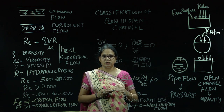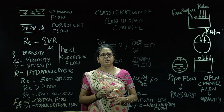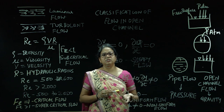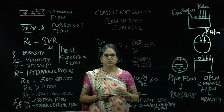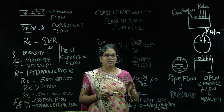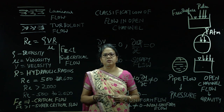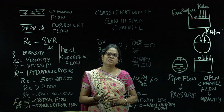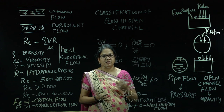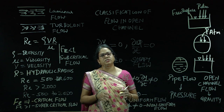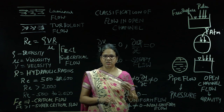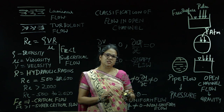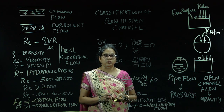If the wetted perimeter of an open channel is minimum, the cost of construction will be reduced and the discharge will be more. On that basis we will find out the dimensions of an open channel. The most economical section is used to determine which type of section to use. The channel shapes considered are: rectangular, trapezoidal, circular, and triangular.